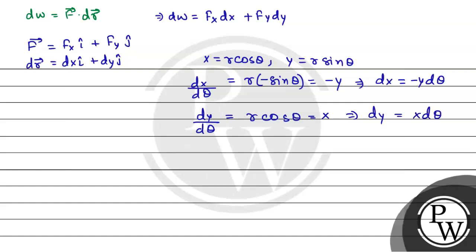So if we put these values in the dw equation, we will have dw equals fx into dx, which is minus y d theta, plus fy into dy, which is x d theta.